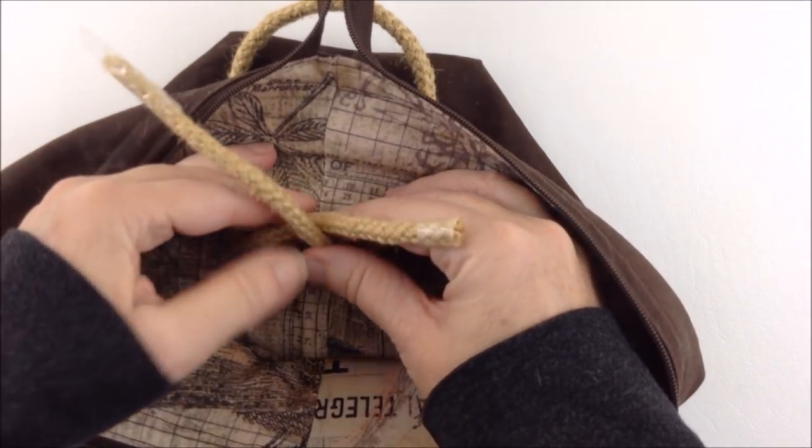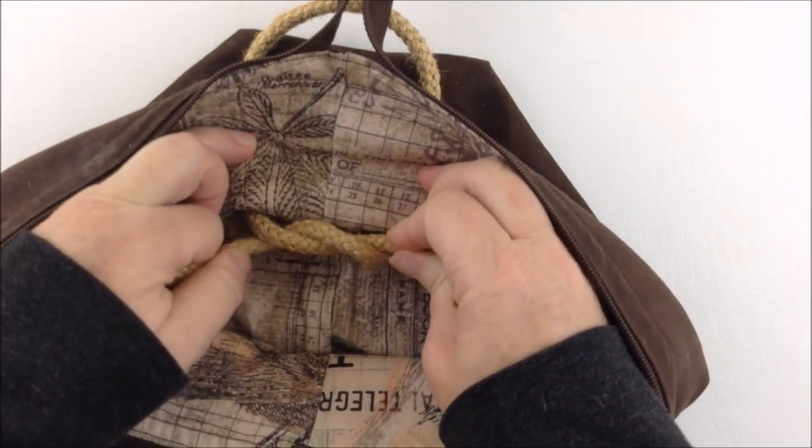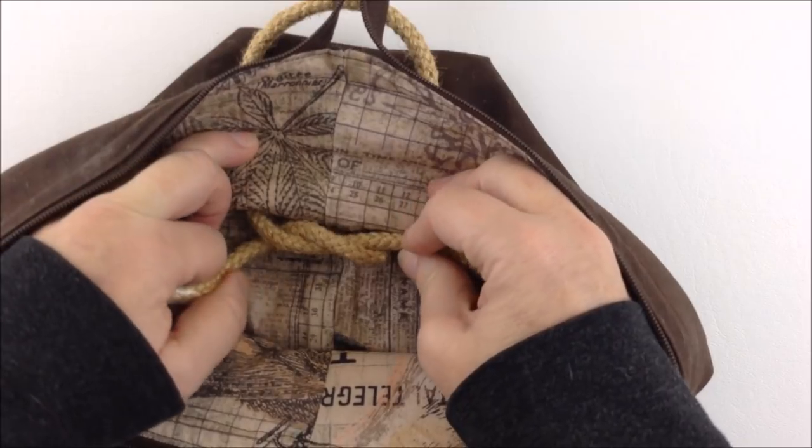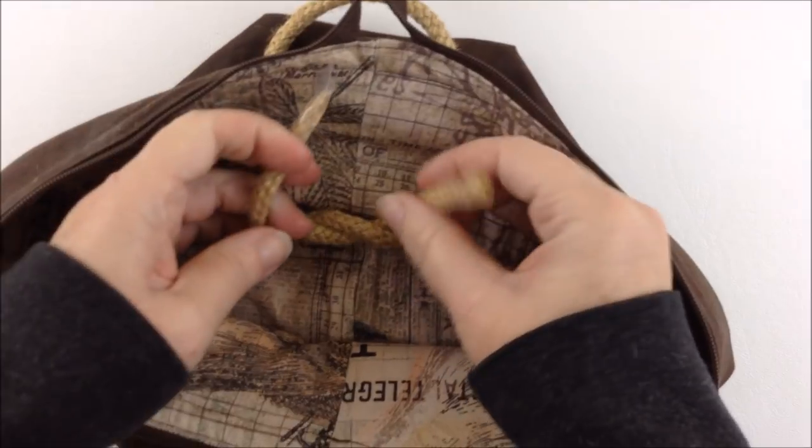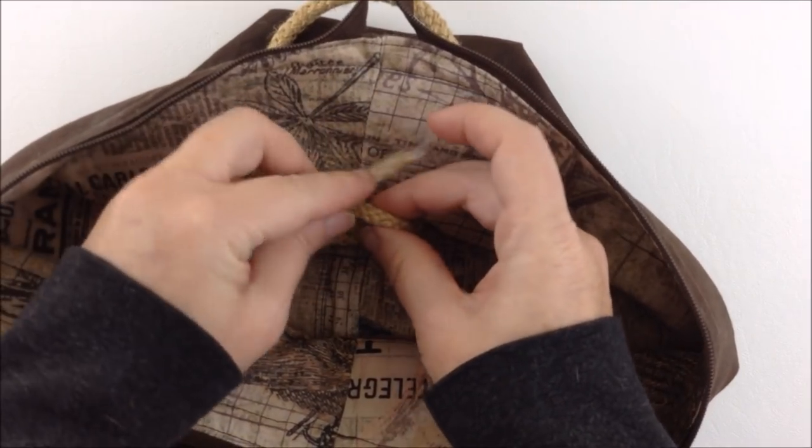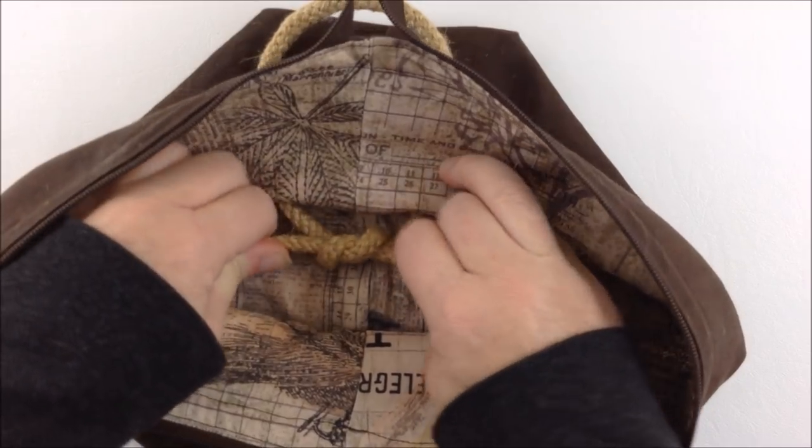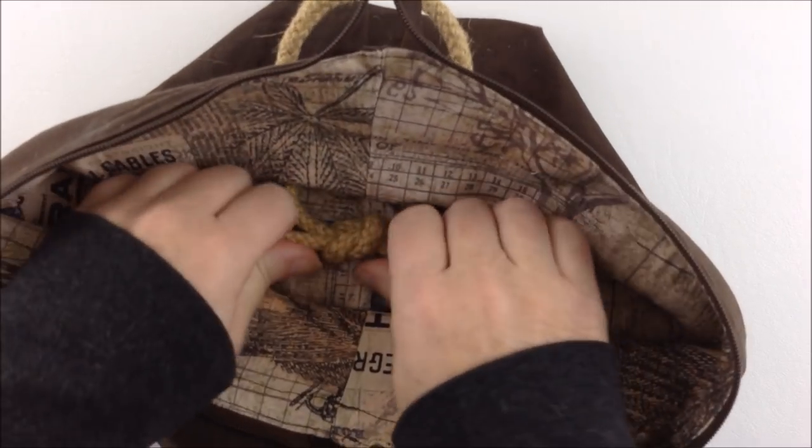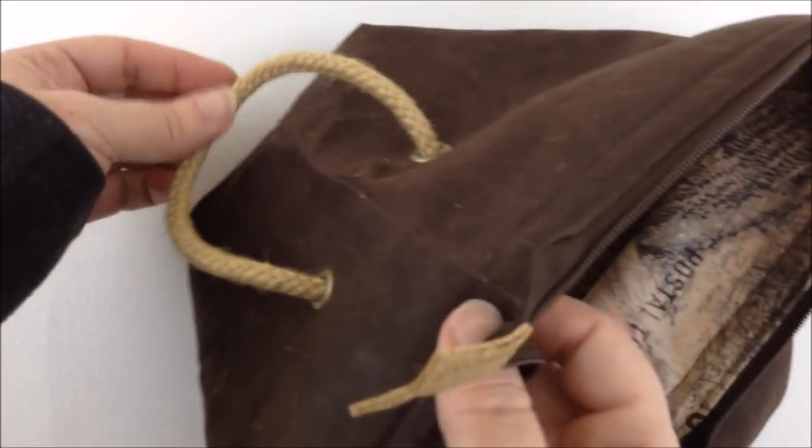So you're going to go right over left, thread it through and just pull it taut so it doesn't pull from the outside and then you're going to do left over right. Then just pull that knot taut. Now before you cut anything off just make sure the handle is the size you want, you're happy with that.